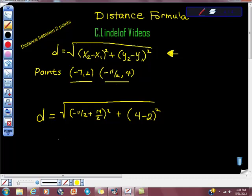And that will give us—let me just keep it simple, I'm just going to work my way down this problem. So we have 14 halves minus 11 halves gives us 3 halves squared, plus 4 minus 2 is 2, so we have 2 squared here.